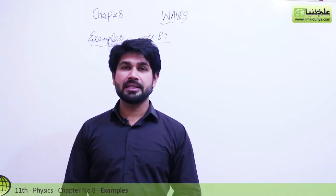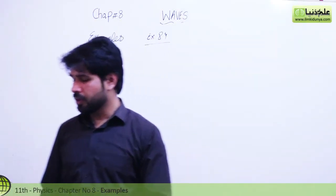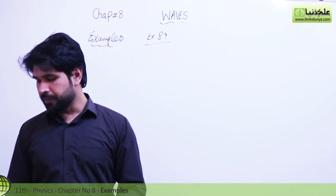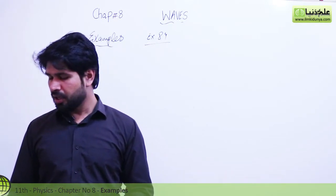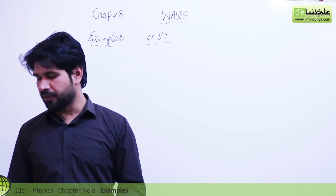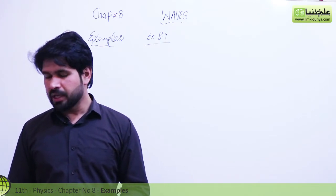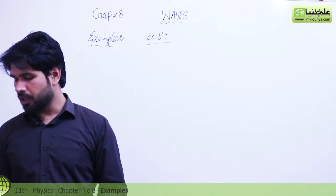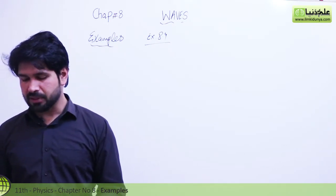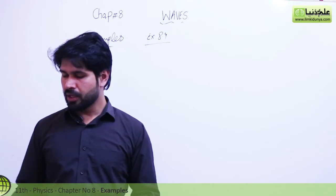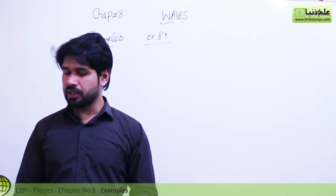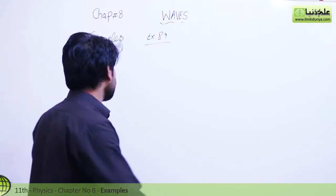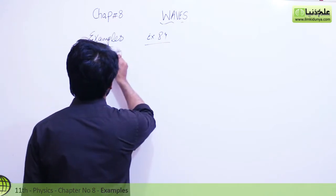Okay students, now we are going to attempt numerical example 8.4. The statement is: a pipe has a length of 1 meter. Determine the frequency of the fundamental and the first two harmonics. A) if the pipe is open at both ends, B) if the pipe is closed at one end. Given: the speed of sound is 340 meters per second.